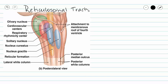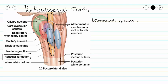Our reticulospinal tracts have something to do with our reticular formation in our brainstem. These pathways are going to carry commands to maintain posture and balance. Those commands are going to go out to the muscles of the trunk, our upper limbs, and our lower limbs to maintain our posture on a regular basis.